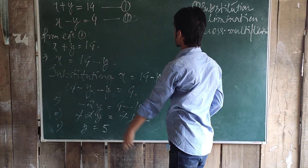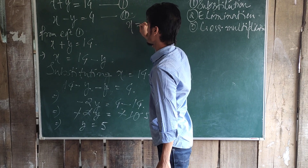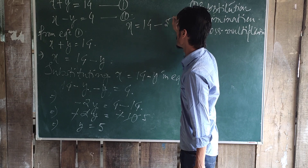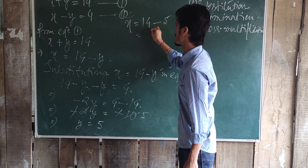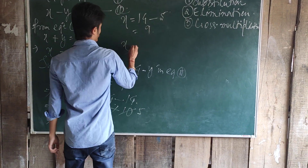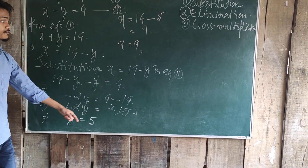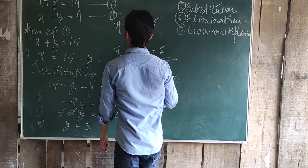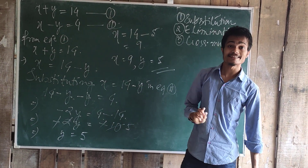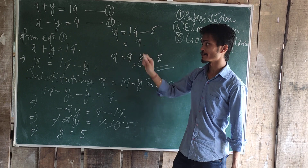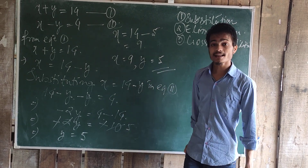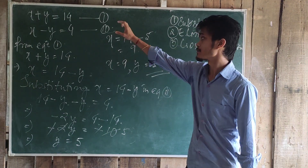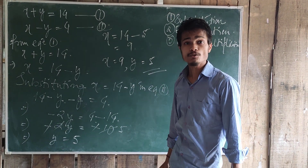Substituting the value for x: x equal to 14 minus y gives us 5. So in terms of y, we are putting 5. 14 minus 5 is 9. So x equal to 9 and y equal to 5 are the solutions of these two given linear equations in two variables. This is the substitution method to solve a pair of linear equations in two variables.